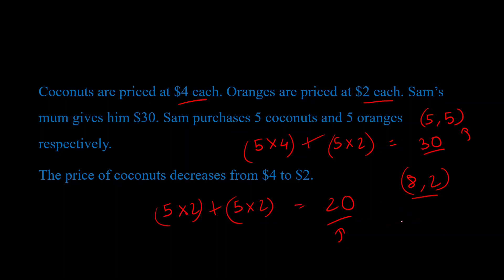So he can obviously buy more coconuts and oranges using that extra dollar, and that is the idea behind the income effect. Because notice when the price of coconuts reduces, Sam, in some sense, is actually getting richer, because he can afford more oranges and coconuts, right?